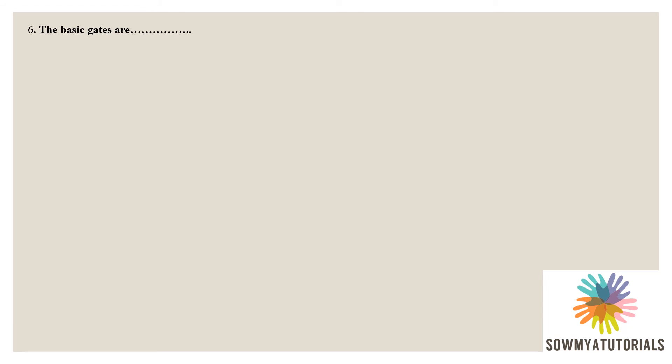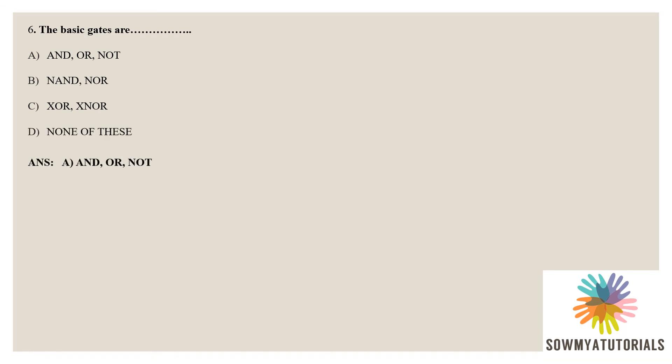Sixth question: the basic gates are which? Options: AND, OR, and NOT; NAND and NOR; exclusive OR and exclusive NOR; none of these. The correct answer is option A: AND, OR, and NOT.